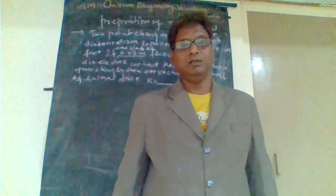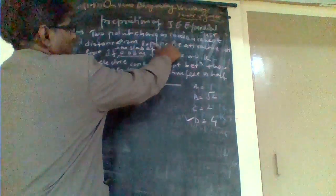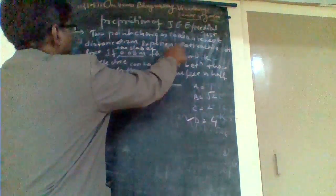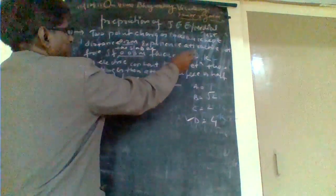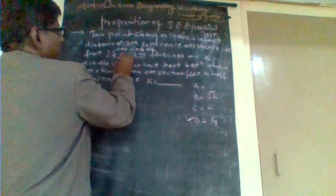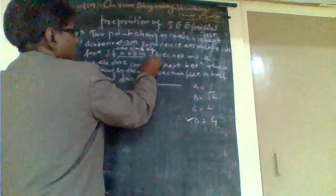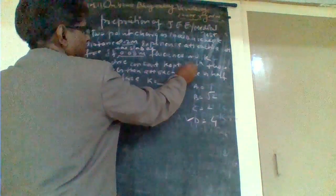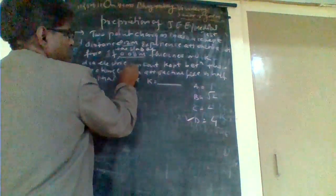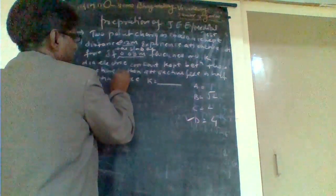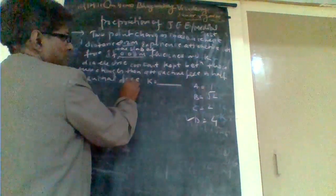In this numerical, two point charges are kept in air at a distance of 0.2 meter and experience a force of attraction. A dielectric slab of thickness 0.08 meter and dielectric constant k is kept between these two charges, then the force of attraction becomes half of the initial force.